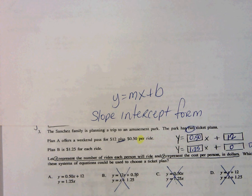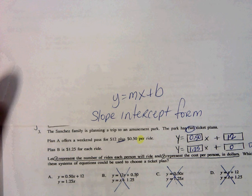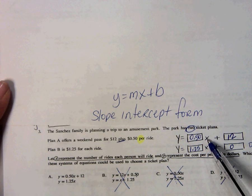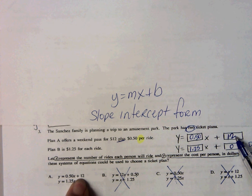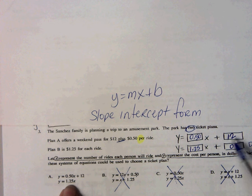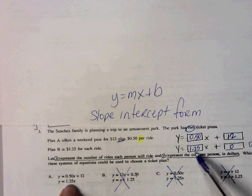We're left with one answer choice, but we want to verify that it is the answer. 50 cents is next to x. 12 sits alone and is added to it. The next equation only has one number by x. This is our answer.